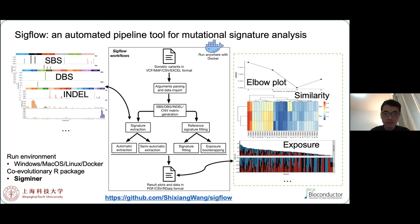SIGFLOW is based on R, so it can be run on any operating system. In addition, a Docker image is also provided, so SIGFLOW and all of its dependencies can be installed with one-line code. If you are interested in Mutational Signatures, please give SigMinor and SIGFLOW a try.